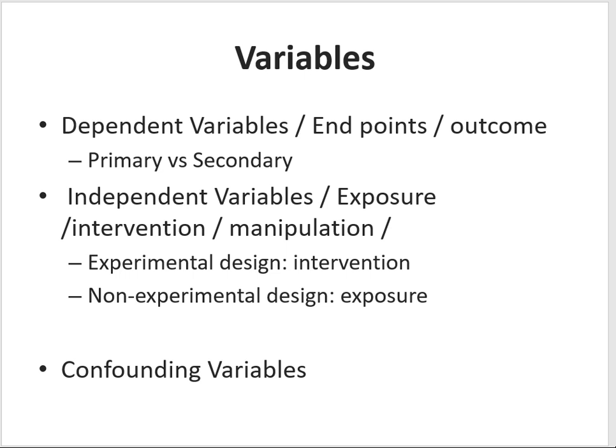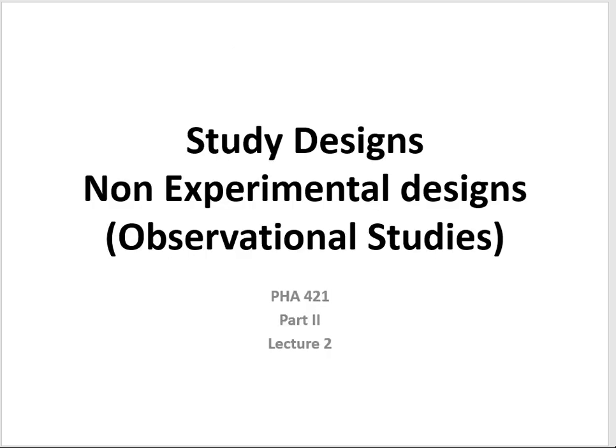Now that we have finished talking about variables, let's talk about non-experimental design, or observational design. What are they, and how can we figure out which type of design we're dealing with? To differentiate between experimental and non-experimental, the most important key issue is that if there is no manipulation, no intervention, no experimentation, then the study becomes observational.